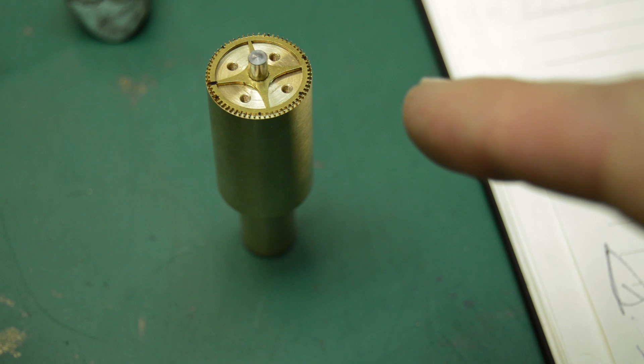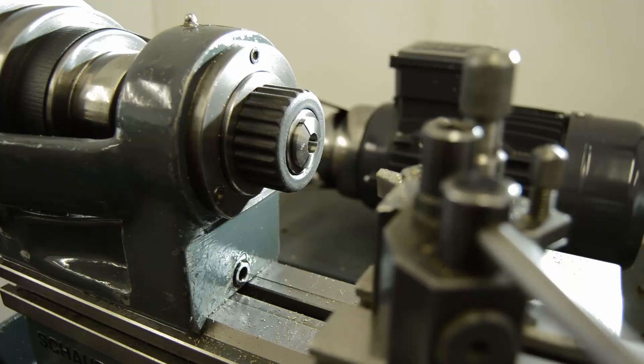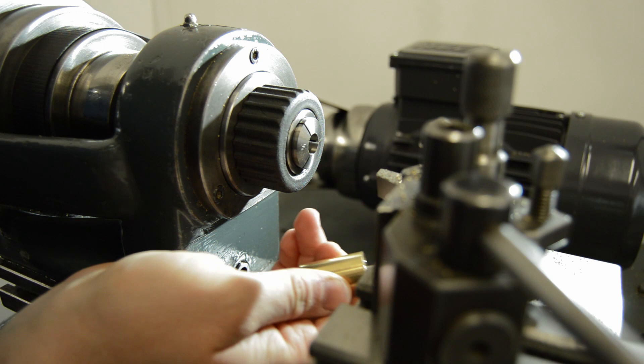I got away with that one and I will now put it back in the lathe and take that last 0.06 off to bring it down to 18.45 OD.